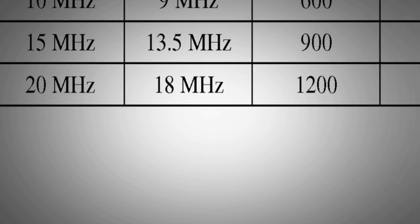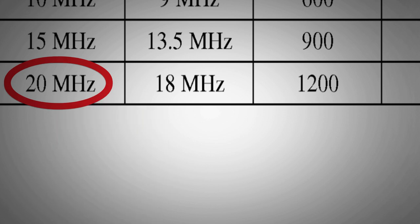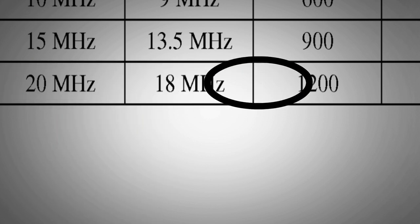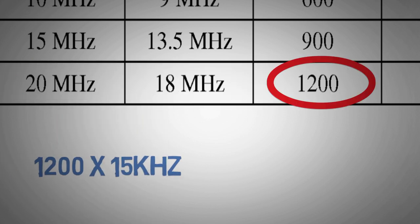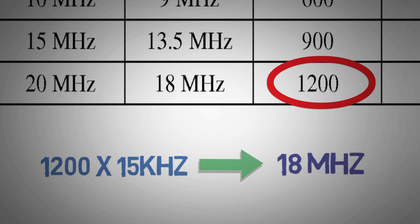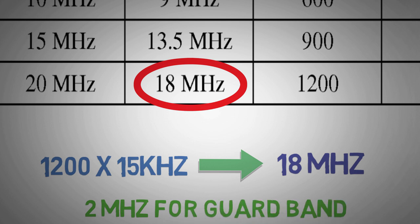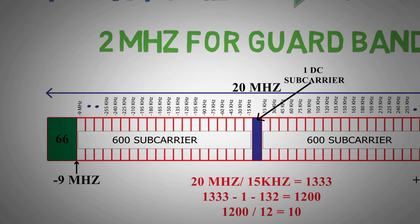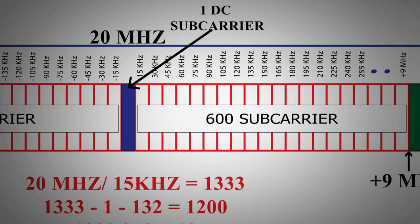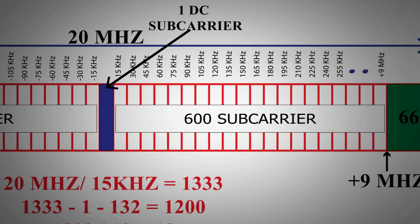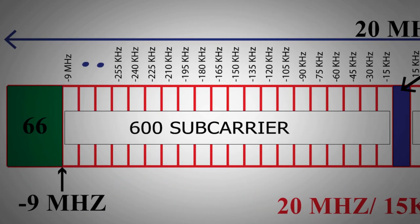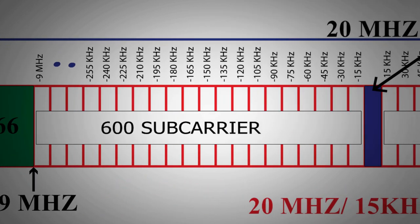Let's take for example LTE bandwidth of 20 MHz, which has 1200 sub-carriers and thus a sub-carrier bandwidth of 18 MHz. 2 MHz used as guard band. Here we have 600 sub-carriers on both sides of the DC frequency. All these carrier frequencies are harmonics of 15 kHz, varying from minus 9 MHz to 9 MHz.